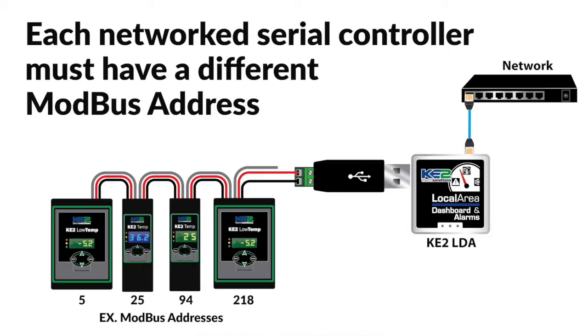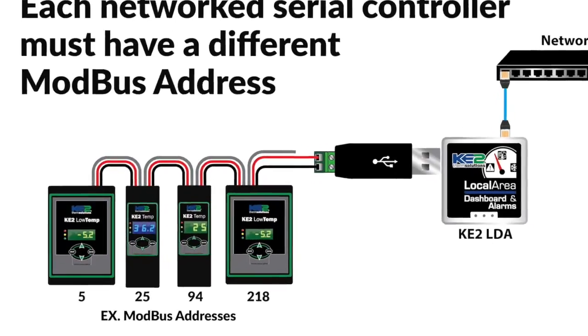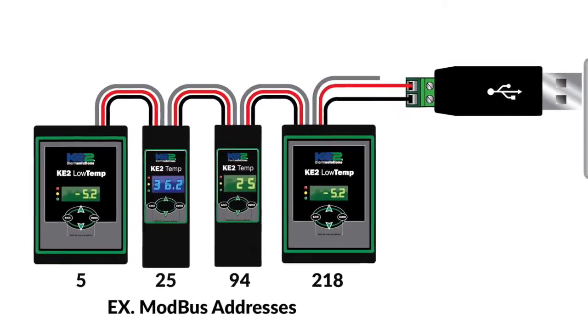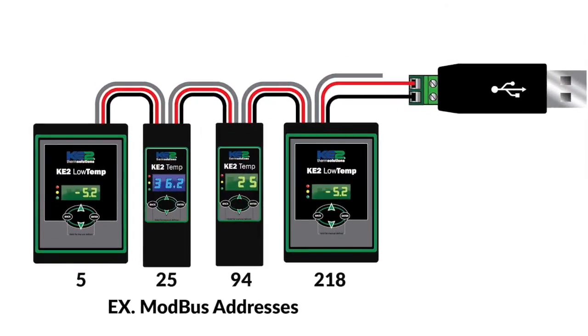If you know you are going to network your controllers, make sure to give each controller its own address. The key-to-temp controllers can be addressed from 1 to 247, so you have plenty of options.